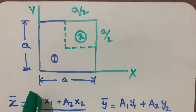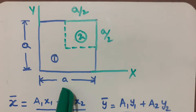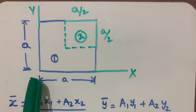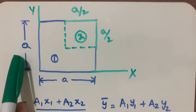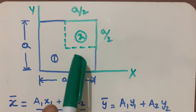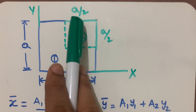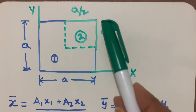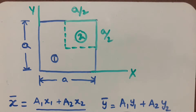The dimensions are: from the origin, the distance along the x-axis to the edge of the big square is 'a', and along the y-axis it is also 'a'. For the small square, the side length is a/2, so from here to here is a/2 and from here to here is a/2.